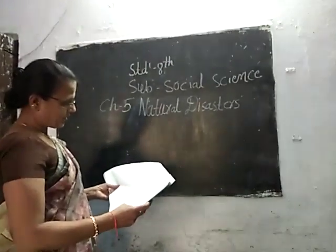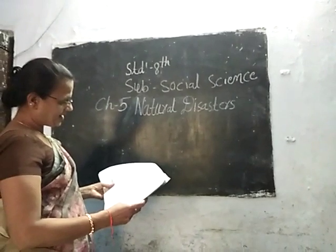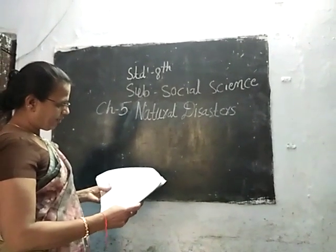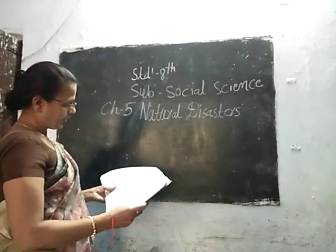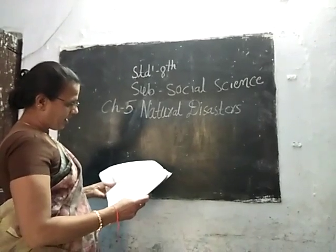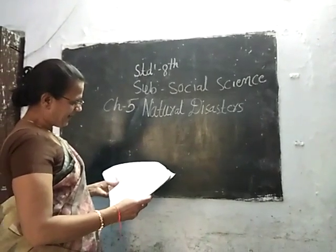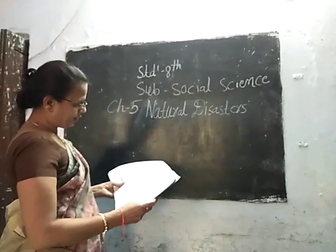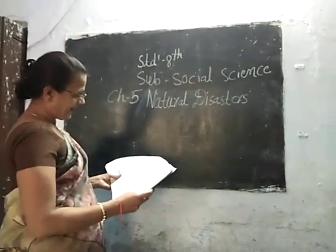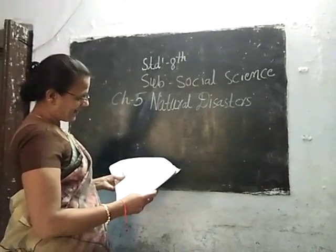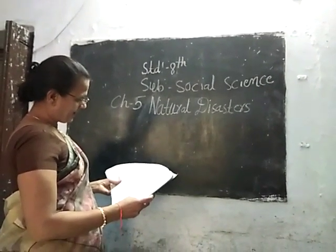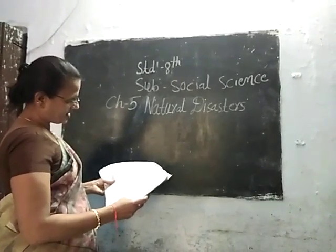In this unit, the introduction covers natural disasters including earthquake, volcano eruptions, flood, drought, excessive rainfall, cyclone, tsunami, forest fire, and land sliding.